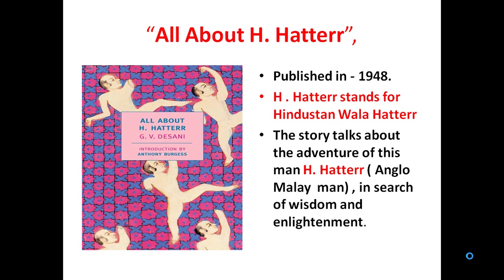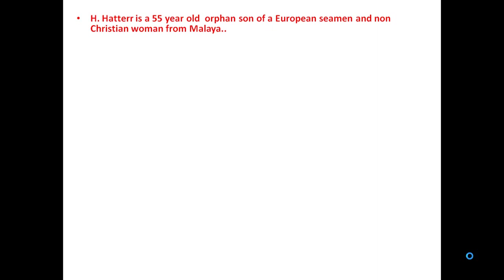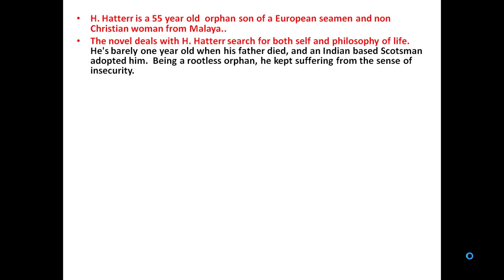The story talks about the adventure of H. Hatter, who is an Anglo-Malayan man in search of wisdom and enlightenment. H. Hatter is a pseudonym for Hindustanwala Hatter. He is a 55-year-old person who is an orphan son of a European seaman and a non-Christian woman from Malaya. The novel deals with H. Hatter's search for both self and philosophy of life.